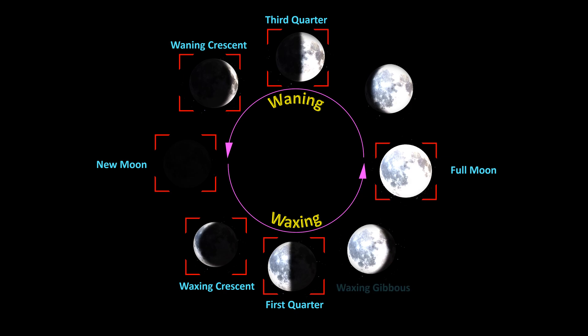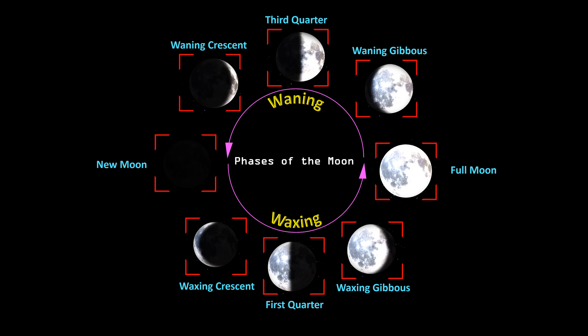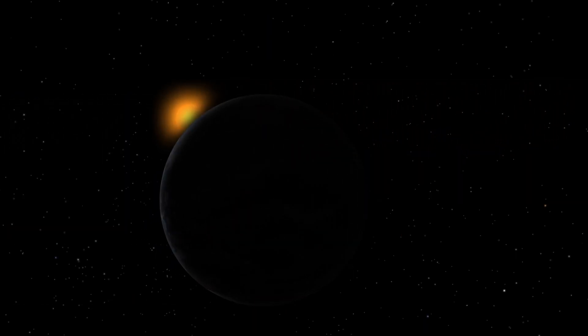The phase between first quarter to full moon is known as waxing gibbous, in which the eastern edge of the moon is dark but most of the visible surface is lit. And the phase between the full moon to third quarter is known as waning gibbous, in which the western edge of the moon is dark but most of the visible surface is lit.